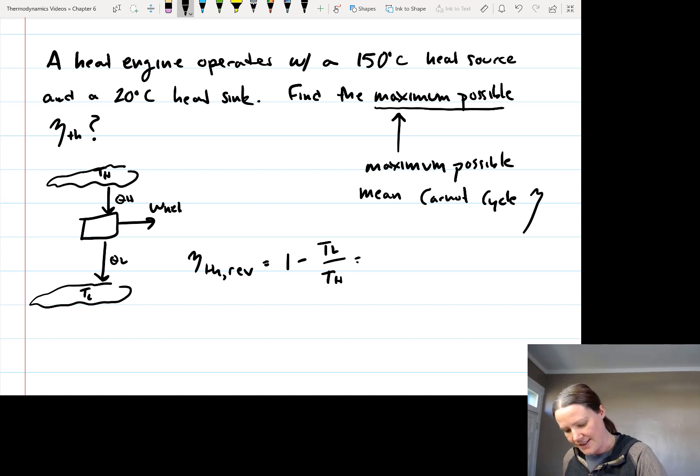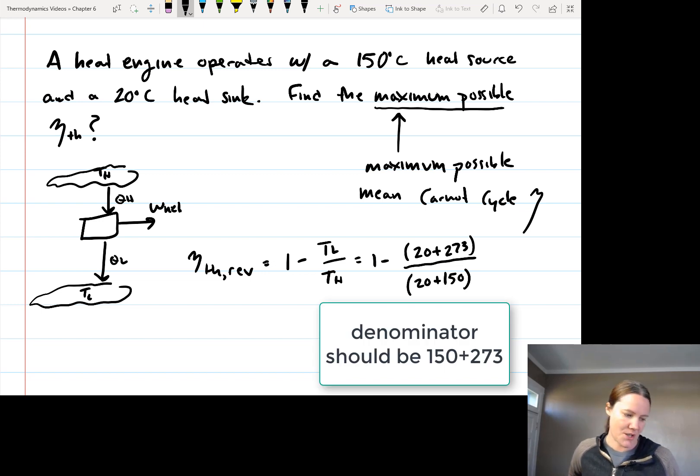And so then this is going to be equal to 1 minus, and our temperatures are given in Celsius, but we need them in Kelvin, so I'm just going to add 273 to both of them. So T low is 20, so I have 20 plus 273, and then this is divided by 20 plus 150, so that gives us our temperature in Kelvin.